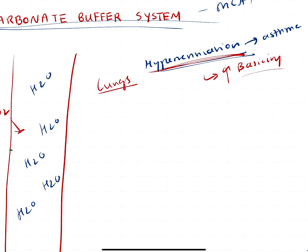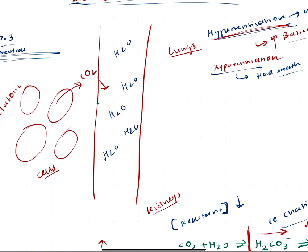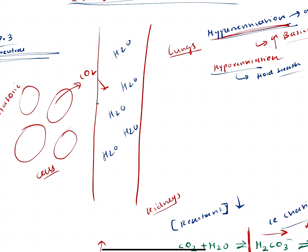Now what's going to happen if we're hypoventilating? The opposite of hyperventilation is hypoventilation, and hypoventilation is, for example, when you hold your breath. Say you're holding your breath. If you hold your breath, the opposite situation happens. There is more CO2 entering the bloodstream and there is less CO2, actually none in the case of you holding your breath, no CO2 leaving the body.